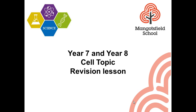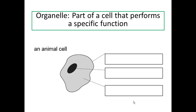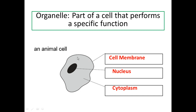Let's start with the animal cell. We are going to refresh all the organelles that we have in this kind of cell, where an organelle is a part of a cell that performs a specific function. The three main organelles that we find in an animal cell are the cell membrane, which covers the whole cell, the nucleus on the inner side of the cell, and the cytoplasm, the jelly part that surrounds the nucleus.